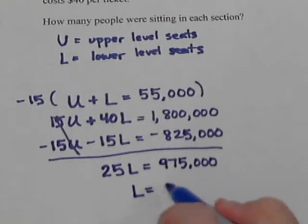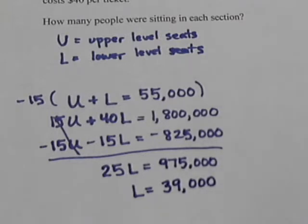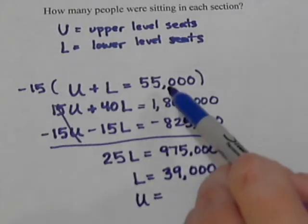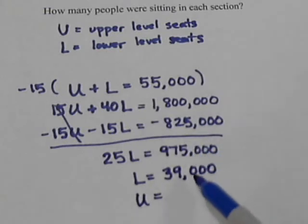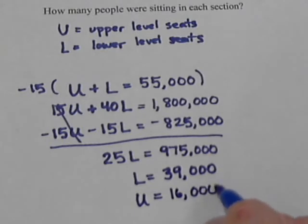We divide 975,000 by 25, and we get L, the lower level: there were 39,000 seats in the lower level. This one's pretty easy to finish — we don't have to do a whole lot of calculating for the upper level. We know there are 55,000 seats total, so we take 39,000 away from 55,000, and we see that there were 16,000 seats in the upper level.